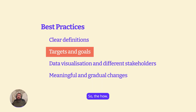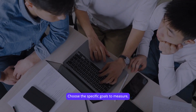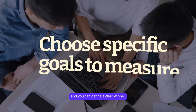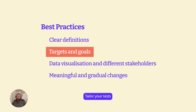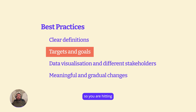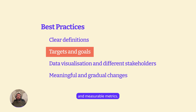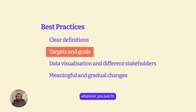Targets and goals — the how. Choose specific goals to measure so you can define a clear winner at the end of your test. Tailor your test to specific groups of users. Make sure you segment so you are hitting your target audience. Use clear and measurable metrics: clicks, conversion rates, satisfaction — whatever you see fit.